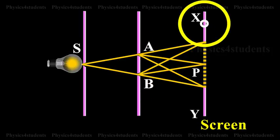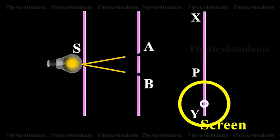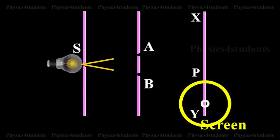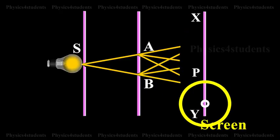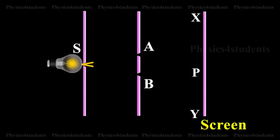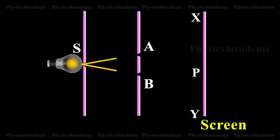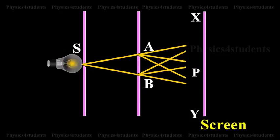When a screen XY is placed at a distance of about 1 meter from the slits, equally spaced, alternate bright and dark fringes appear on the screen. These are called interference fringes or bands. Using an eyepiece, the fringes can be seen directly.